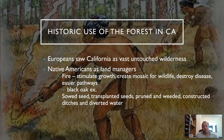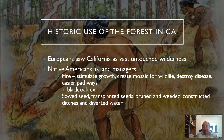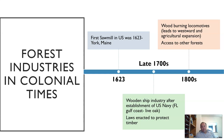The Native Americans in this area really were land managers — they sowed seeds, transplanted seeds, pruned and weeded, constructed ditches, and diverted water. For the Europeans and settlers moving west, California was seen as vast untouched wilderness, but what they actually saw was a land that was being managed by people.